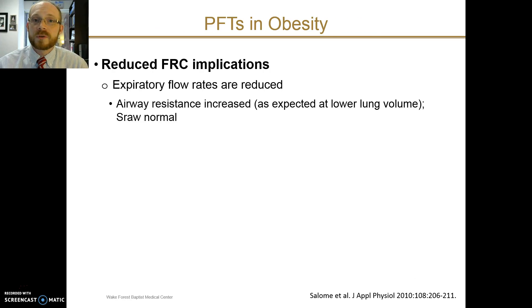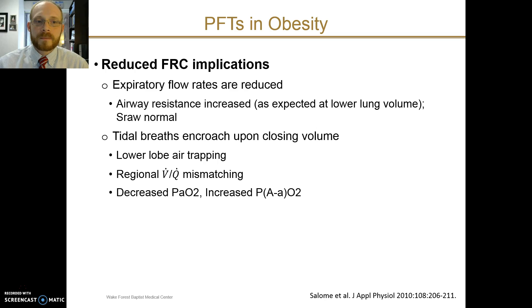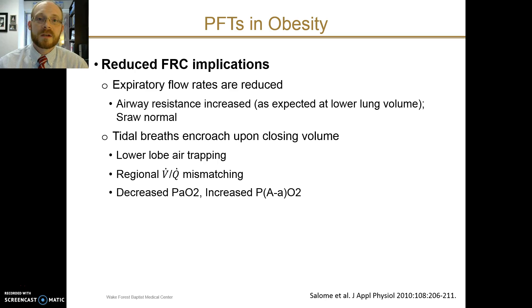There are some significant implications of reduced functional residual capacity. One is that the expiratory flow rates are reduced, and another way to say this is that airway resistance is increased. This is normal at lower lung volumes because the cross-sectional area of the airways is smaller and there's less tethering by surrounding lung tissue. However, the specific resistance of the airways is normal, suggesting that the airways themselves are not the problem. At extreme levels of obesity and extreme reductions in FRC, even tidal breathing can encroach upon the closing volume. This can lead to air trapping that increases in the lower lobes and regional mismatches in ventilation and perfusion, with an end result of hypoxemia and an increased A-a gradient.